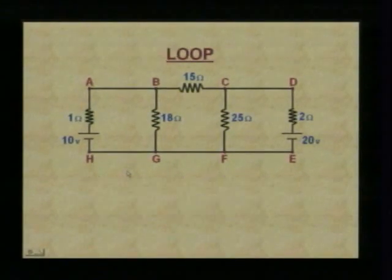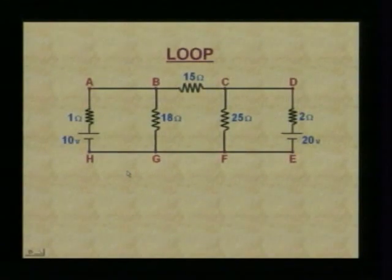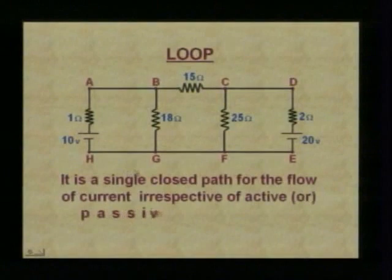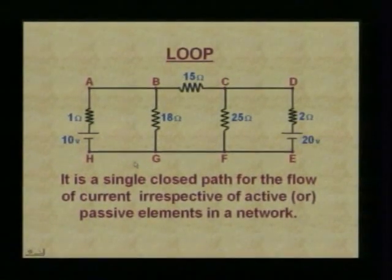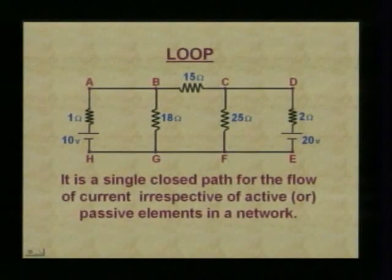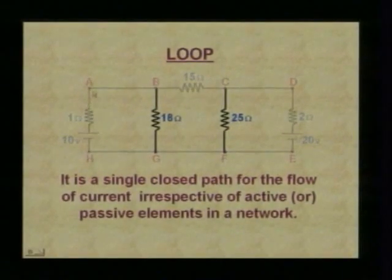Now let us talk about the next one: a loop. A loop is a single closed path for the flow of current, irrespective of active or passive elements in a network. If we observe, this is one single closed path — we can say this as a loop.